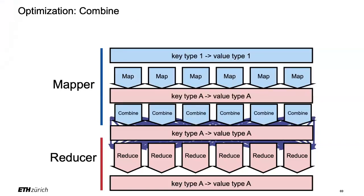The idea is to add a combine step. When the intermediate key values are output by the map function, instead of directly storing them on disk or shipping them over the network, we pre-aggregate them. For example, if you're computing the sum when counting words, you can pre-aggregate the sums you already have. If you see the same word multiple times, instead of outputting multiple pairs, output one with the partial sum. That's an optimization.